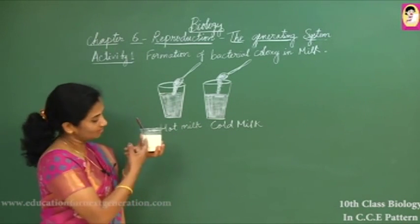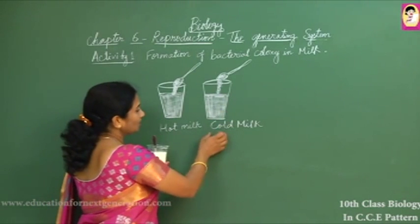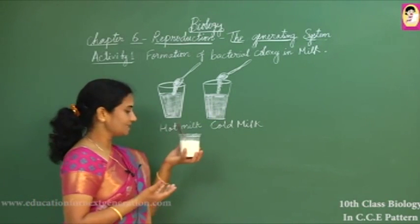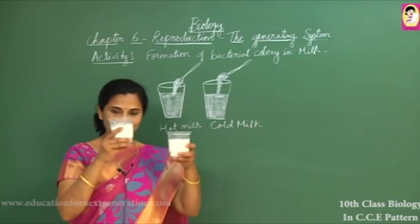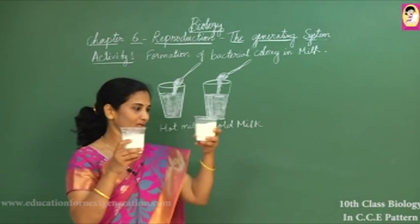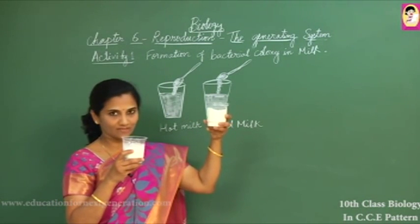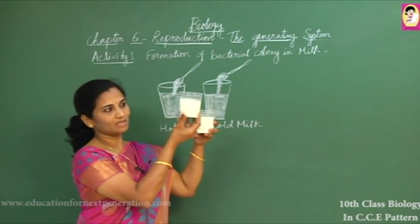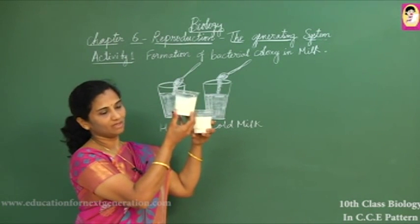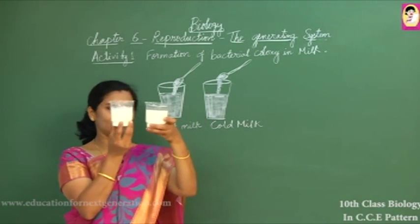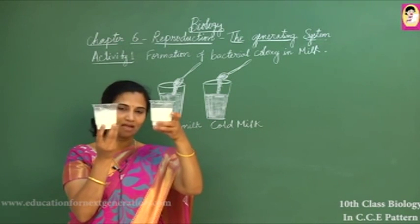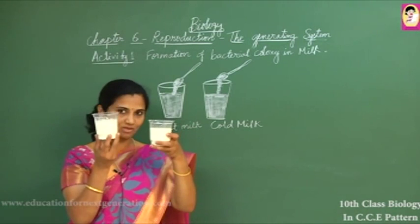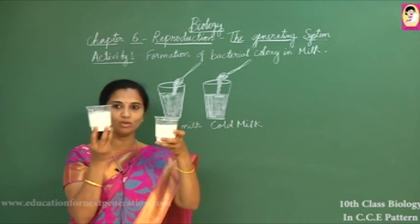Hot milk curdles faster because at higher temperatures the bacteria can multiply very fast. In cold milk, curdling takes more time. After a few hours, we can observe that in the hot milk sample, curdling has started — you can see curds forming and protein settlement, with fats separating from the milk — while the cold milk is still unconverted.